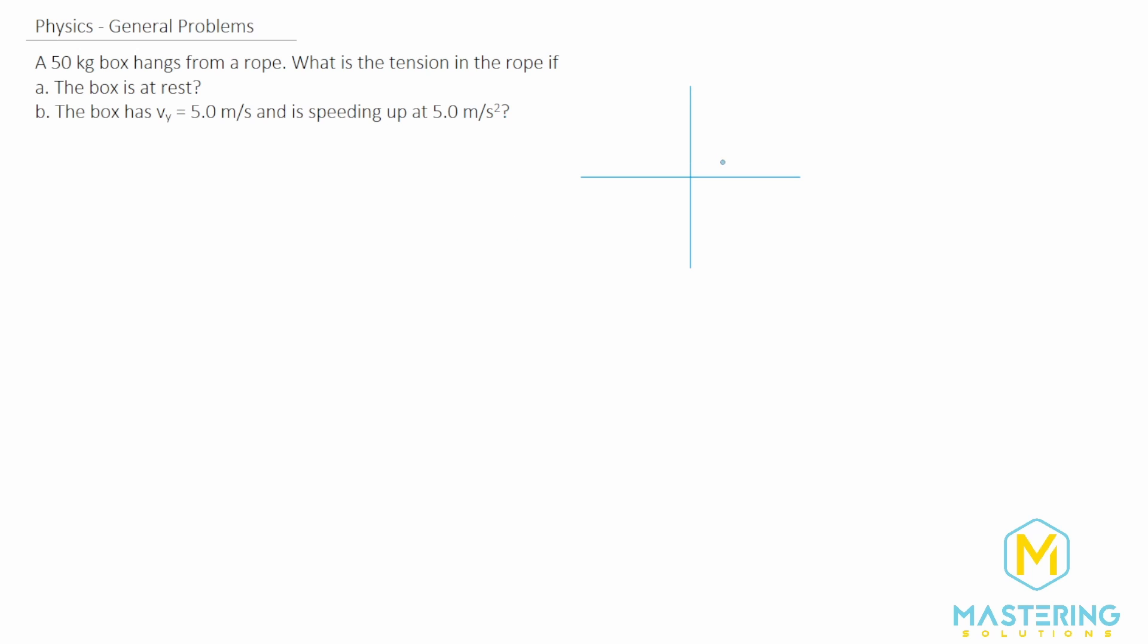Before we get into the two parts, let's draw our free body diagram here. So we have tension holding the box up, so we have T, and then weight coming down. That's really all that's going on in this situation, because the box is just hanging from this rope.